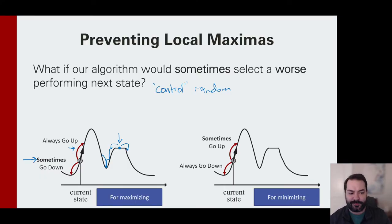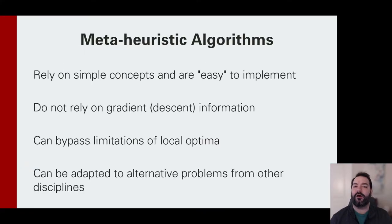When we're trying to minimize, yes we want to always go down, but sometimes we want to go up. And that actually introduces us to what we call meta-heuristics, or you often see the term biologically inspired AI.